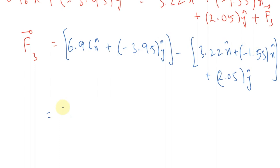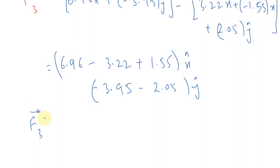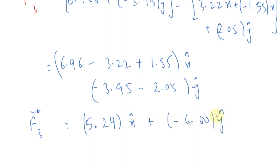Separating x and y components: x-component: 6.96 − 3.22 + 1.55 = 5.29 Newton; y-component: −3.95 − 2.05 = approximately 0.00 Newton. Therefore F3 = 5.29 x̂ + 0.00 ŷ Newton. This is the required answer for the unknown force F3.